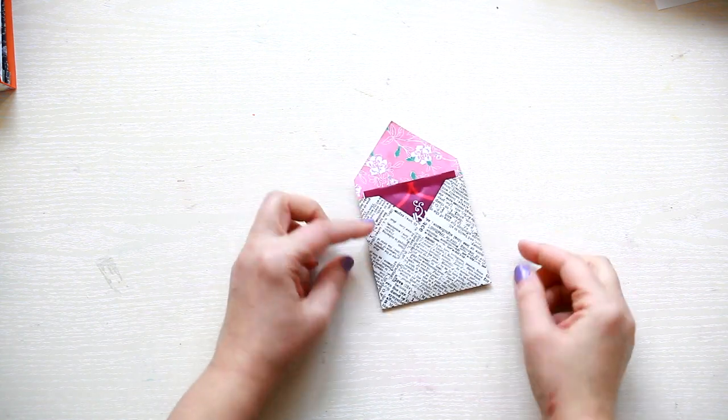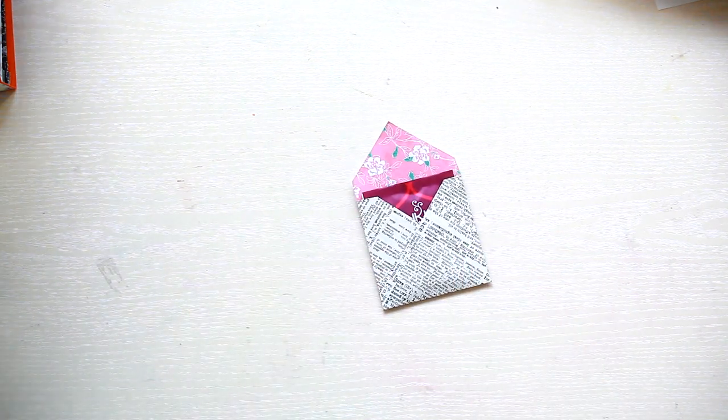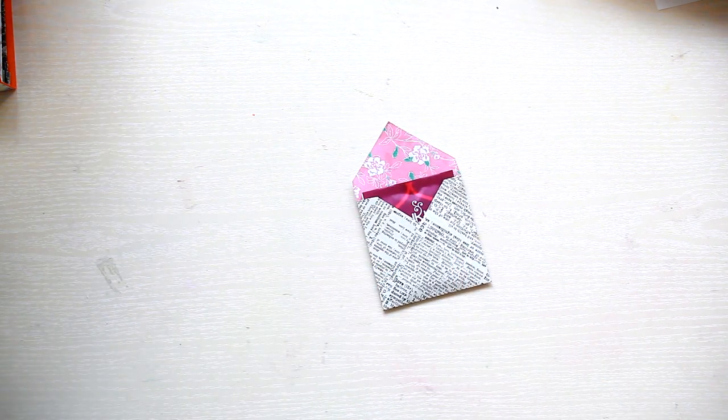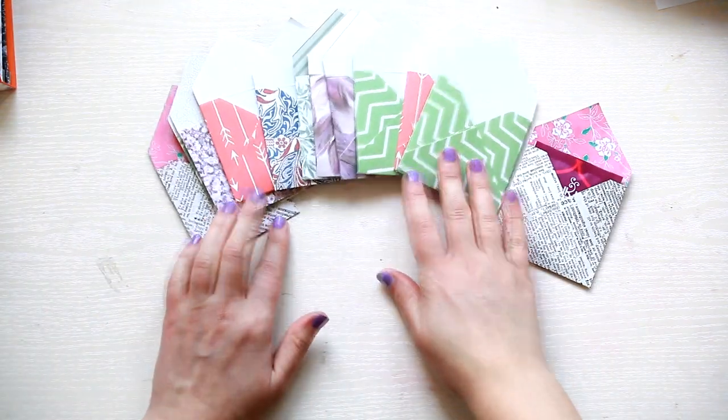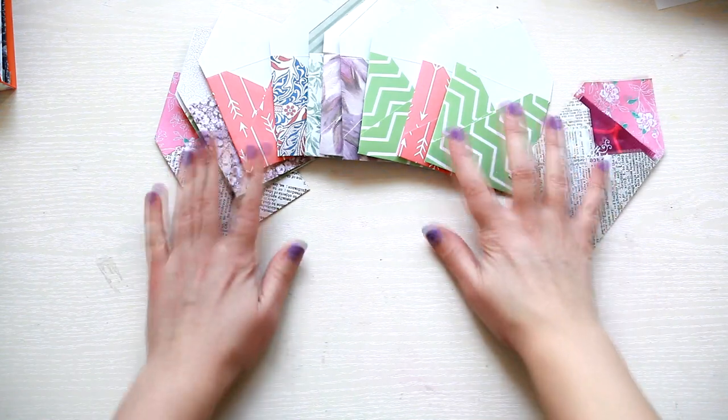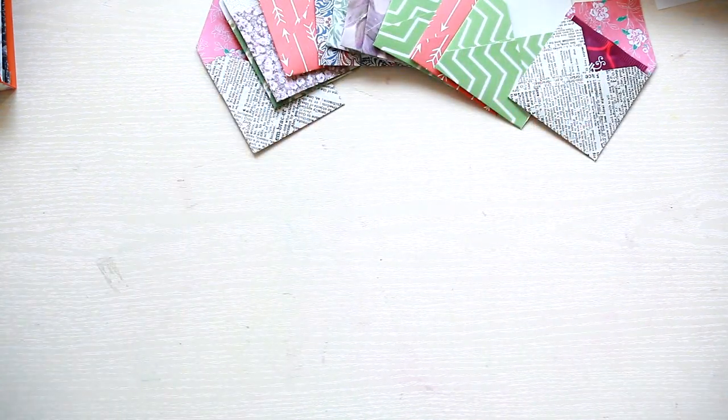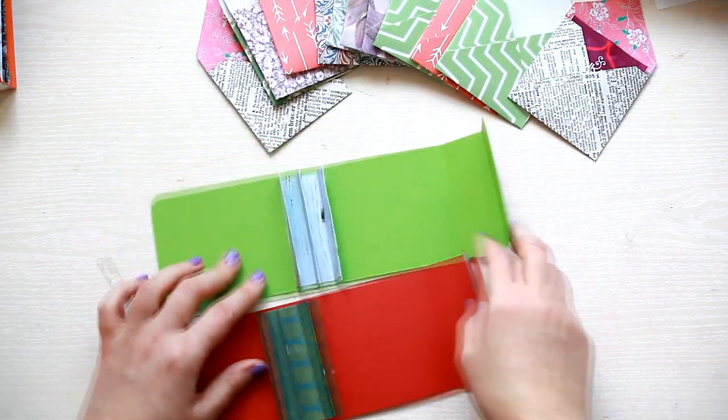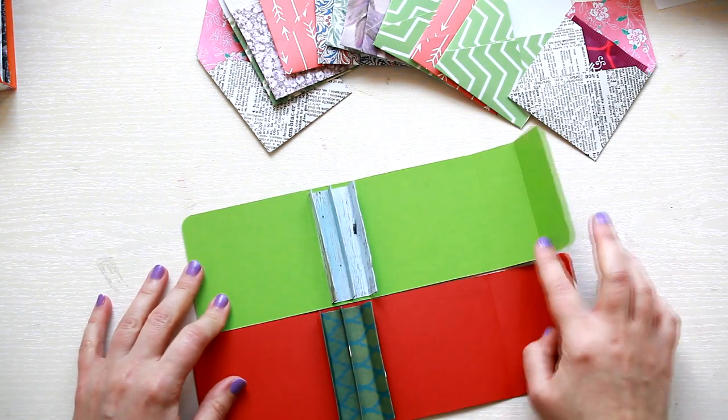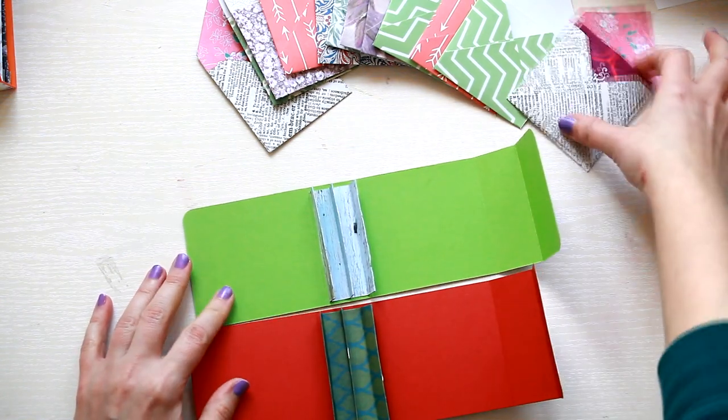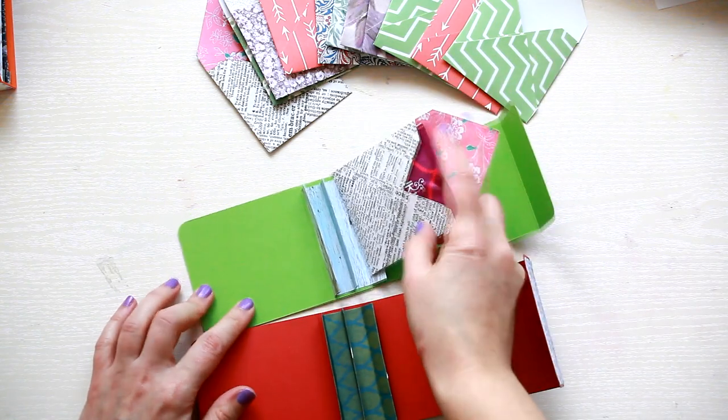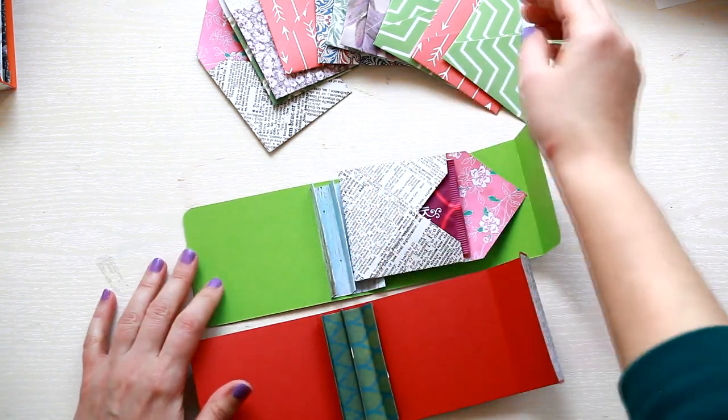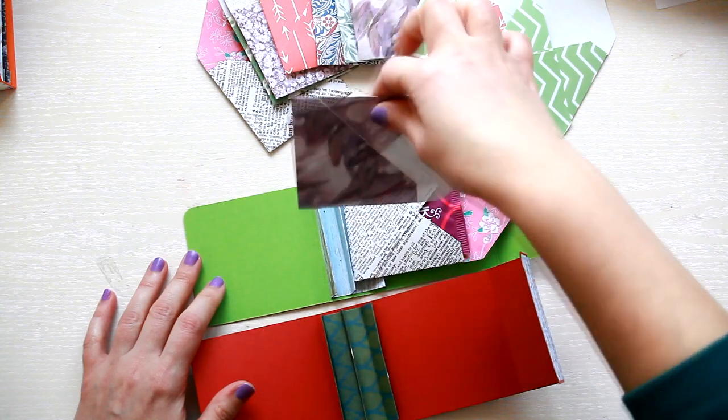You can also use this type of envelopes for your journaling. And you can make them any color you want, just use your paper scraps. These envelopes will be fixed on the inside of the tea bag holder.